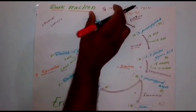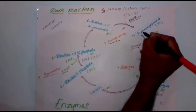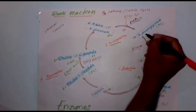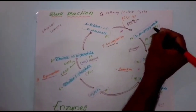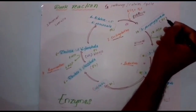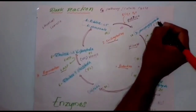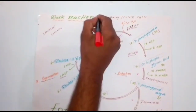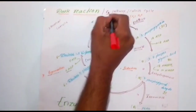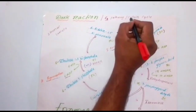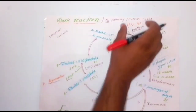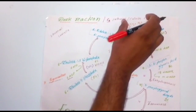In this dark reaction, the first stable compound is phosphoglyceric acid or phosphoglycerate. It consists of three carbons. The first stable carbon compound is phosphoglycerate which consists of three carbons, hence the dark reaction is also called as C3 pathway or C3 cycle. It is also called as Calvin cycle because the process was explained by scientist Melvin Calvin.